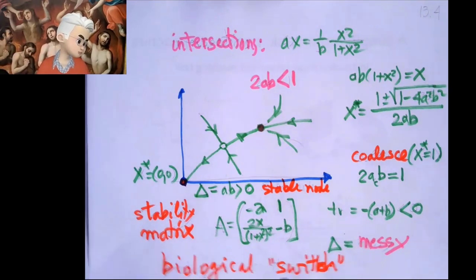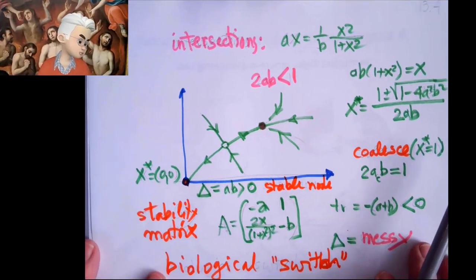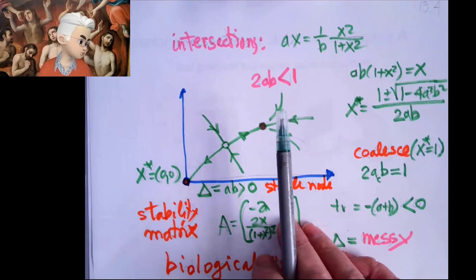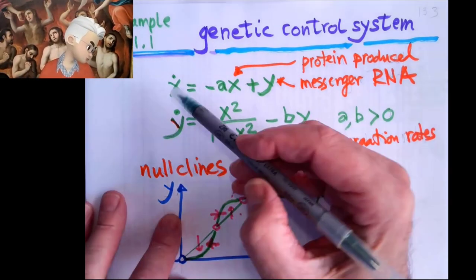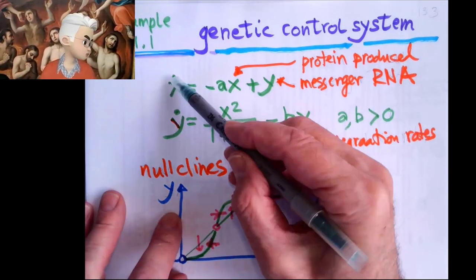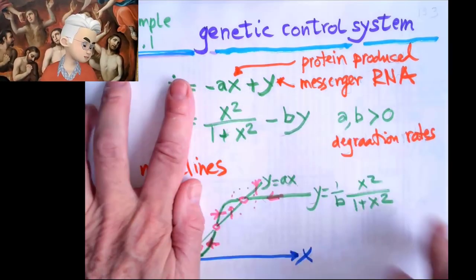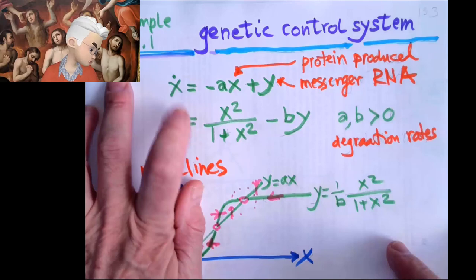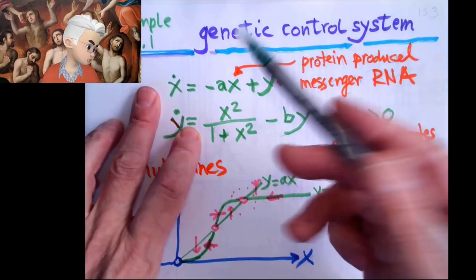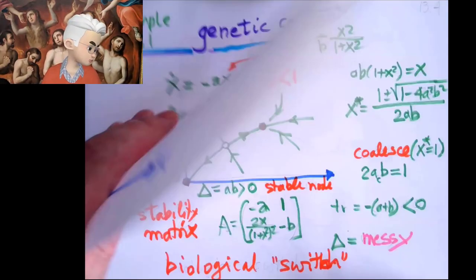So now, you compute these fixed points, and they're obtained, of course, fixed points are obtained when both velocities are zero. So you have to solve these two equations together. This is going to be quite easy, because y is in a very simple place.